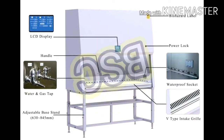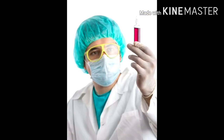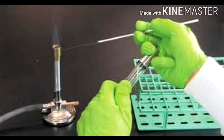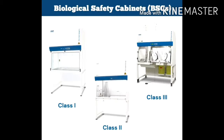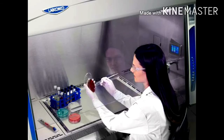The biological safety cabinet, or BSC, is the principal device used to provide containment of infectious splashes or aerosols generated by many microbiological procedures. Three types of biological safety cabinets are used in microbiological laboratories: Class 1, Class 2, and Class 3.